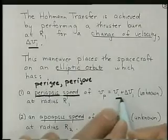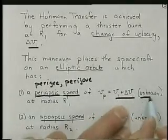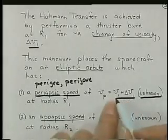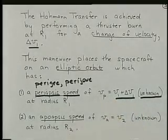So it will have this speed of V1 plus the delta V1 that you gave. This is unknown because we don't know how much delta V1 we need to add yet. The V1 we know because that's the circular speed.